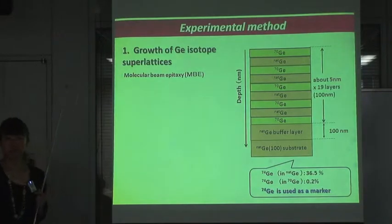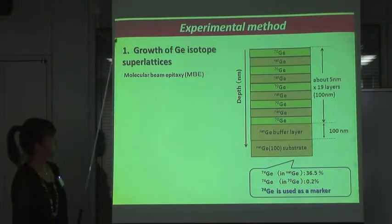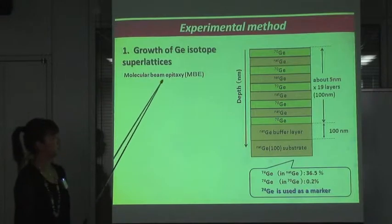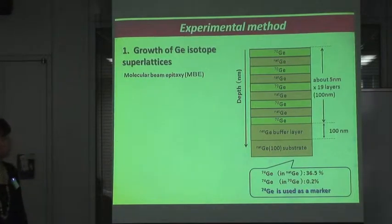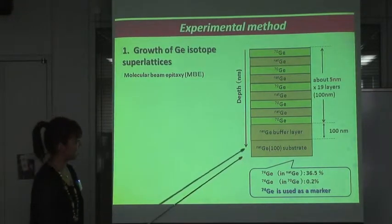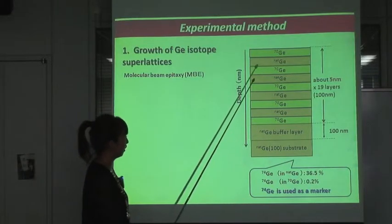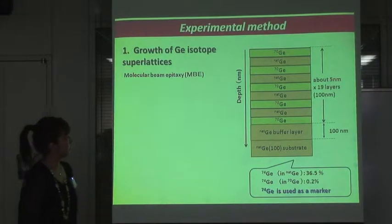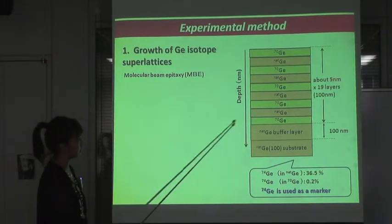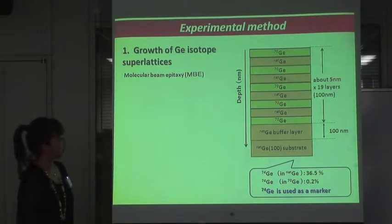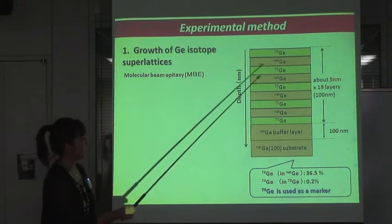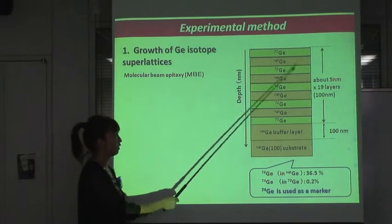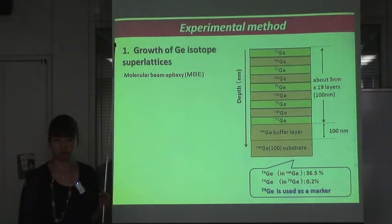The experimental method. First, we grew Germanium isotope superlattices by using molecular beam epitaxy. The structure is alternating layers of 70Ge and natural Germanium, as shown in this figure, and one layer thickness is in the range of 5 nanometers to 7 nanometers.